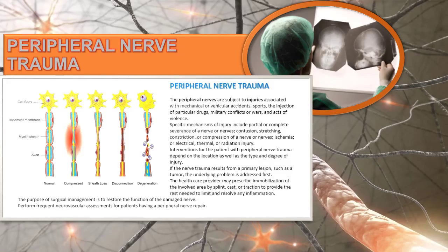Peripheral nerve trauma can happen from an MVA, from sports, from injection of drugs, and from military service. Specific mechanisms of injury include partial or incomplete severance of the nerve, contusion, stretching, ischemia, electrical activity, or radiation injury.